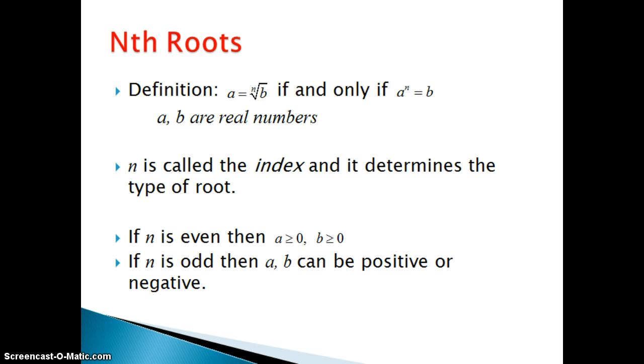Now n can be an even number or an odd number. If n is even, then the root itself can be only a non-negative number which means greater than or equal to 0. And the radicand, what's inside the radical symbol, also can't be negative. However, if n is odd, then a and b can be either positive or negative. And we will see examples of both. But please take a moment and write down this definition on your worksheet.